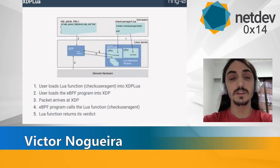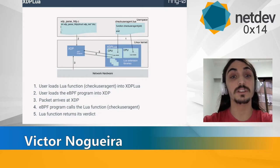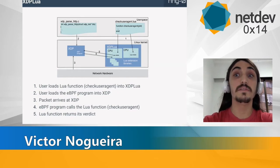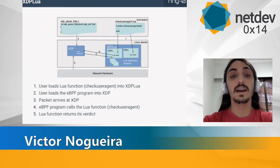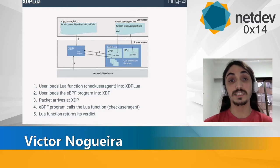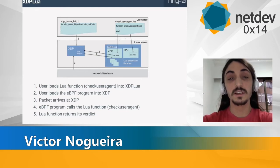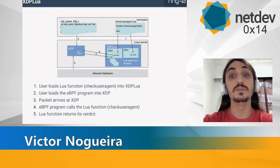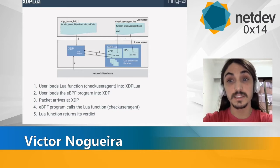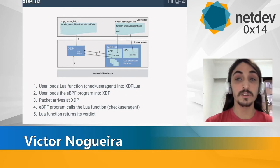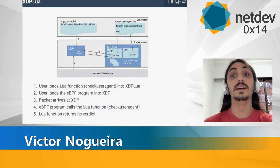To illustrate how XDP Lua works, I'll use the same user agent verification example. The user first loads the check user agent function, then loads the eBPF program into XDP. When an HTTP request arrives at XDP, the eBPF program executes, sees it has received a TCP packet destined to port 80, and calls the Lua function check user agent. This function extracts the user agent from the HTTP request, checks if it is in a block list, and if it is, returns a value to the eBPF program telling it to drop the packet. Otherwise, it returns a null value, telling the eBPF program to let the packet pass through to the networking stack.